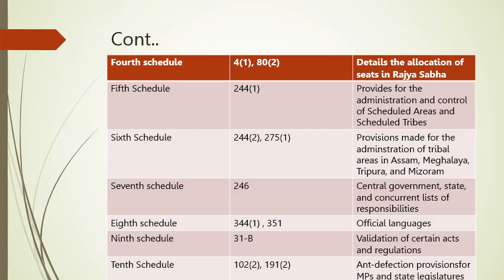The fifth schedule includes article 244(1). It provides for the admission, administration, and control of scheduled areas and scheduled tribes. The sixth schedule explains provisions made for the administration of tribal areas in Assam, Meghalaya, Tripura, and Mizoram, and includes articles 244(2) and 275(1).